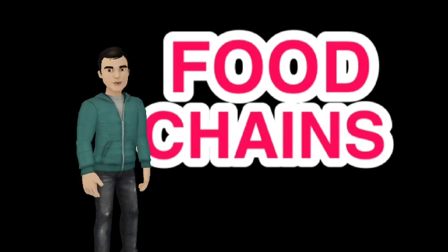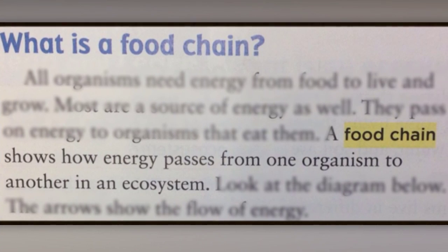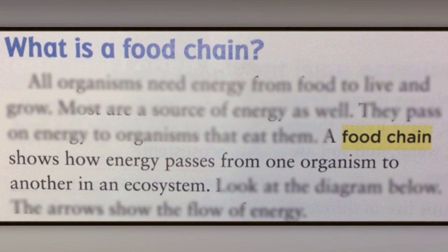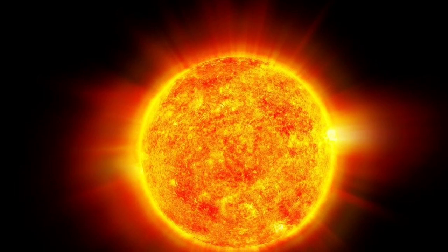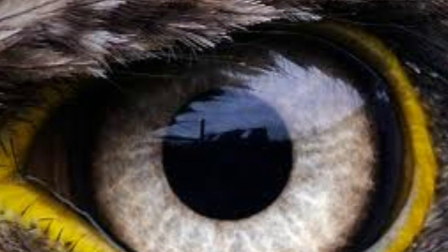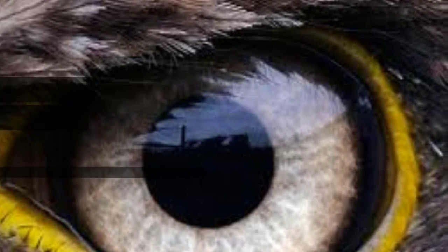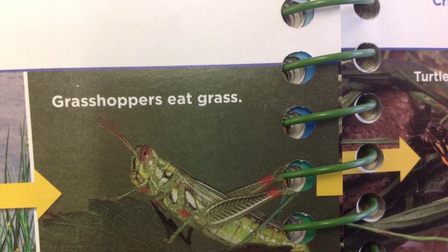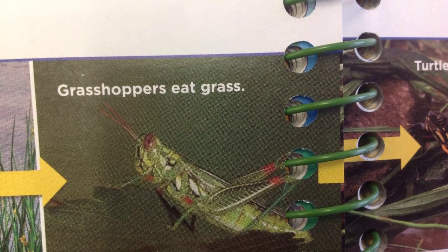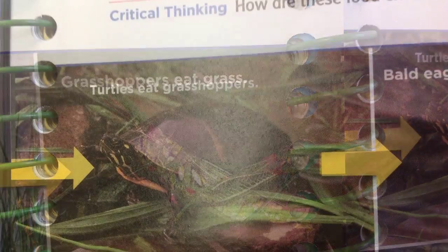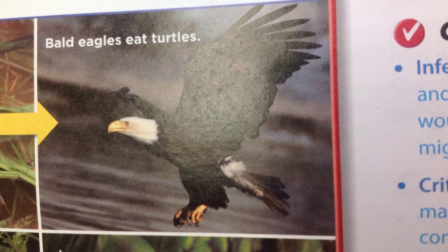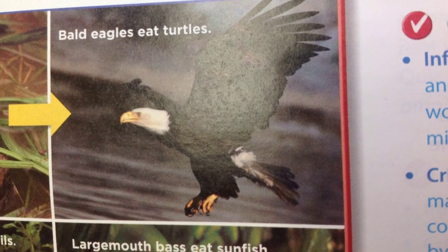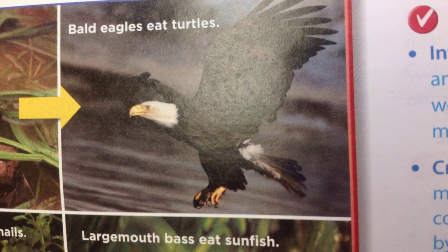Now, the next step we need to take is to talk about food chains. A food chain is just a diagram or a drawing that shows how energy passes from one living thing to another. Are you guys looking at this food chain? It starts all the way with the sun and ends up with a bald eagle. The sun was giving energy to the grass, the grasshopper was eating the grass, then a turtle was eating the grasshopper, and then an eagle was eating the turtle.